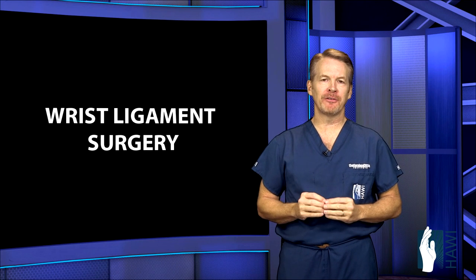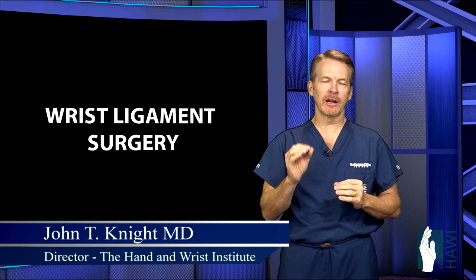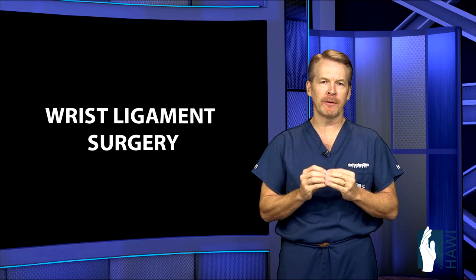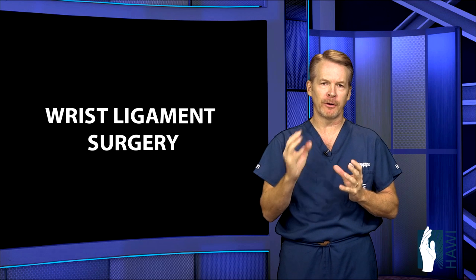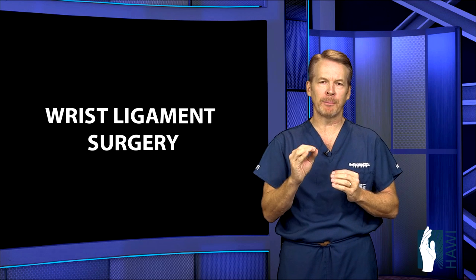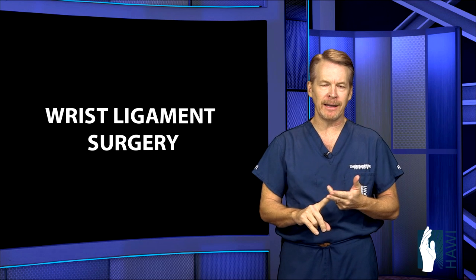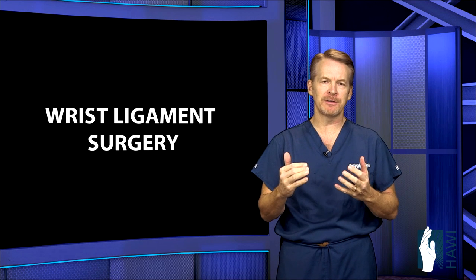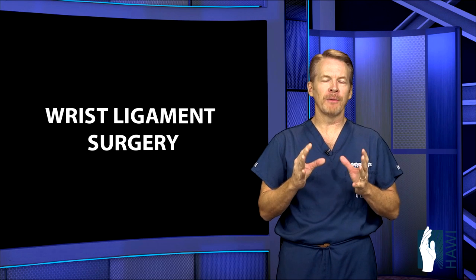Let's talk about wrist ligament surgery. The wrist ligaments are small ligaments that hold the eight bones in the wrist together, and they provide important tethering of these bones during wrist movement. When just one ligament becomes disrupted, this alters the mechanics of the wrist, which can cause significant pain and significant limitation of function, leading to premature arthritis over the long term. This occurs most commonly from a fall on an outstretched wrist.